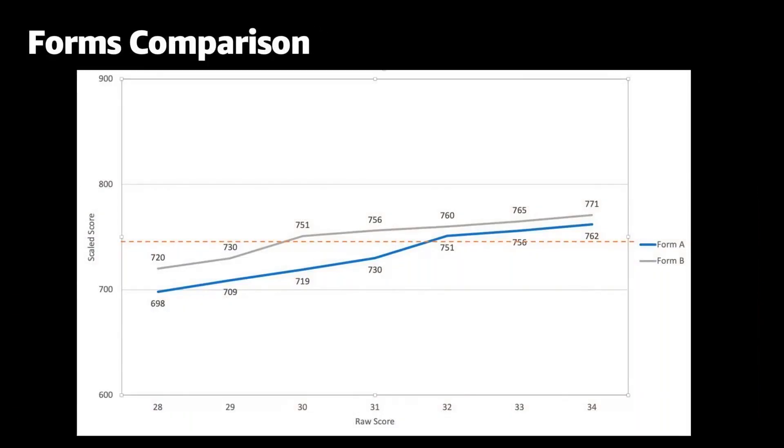At AWS, the 750 is the passing scale score for all the exams at the professional and specialty levels. Since the knowledge and skills tested on these exams are vastly different, the passing raw scores are different. However, the scale scores are the same. For the associate exams, the passing score is 720 and it is 700 for the foundational exam.